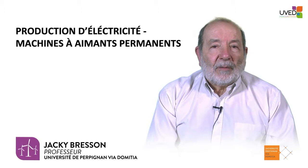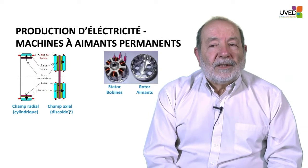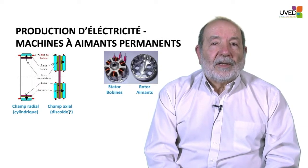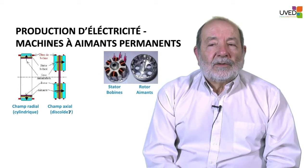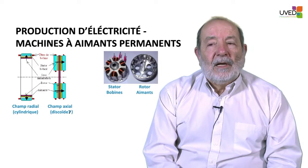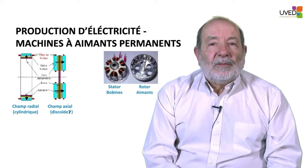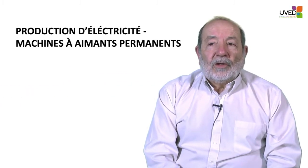The machines currently used are synchronous machines or permanent magnet motors — brushless motors. They use magnets that rotate in front of a coil. There are two categories: when the magnetic field is perpendicular to the rotating axis, we call it a radial or cylindrical machine; when the magnetic field is parallel to the rotating axis, we talk about discoid axial machines. The picture in the middle shows the elements fixed inside the rotor on which the blades are mounted, with magnets rotating in front of the coil attached to the stator.